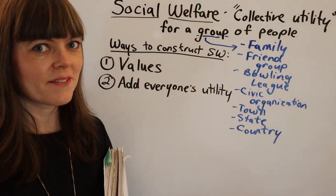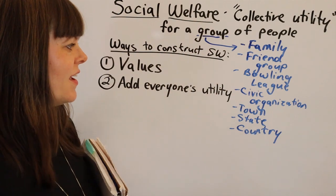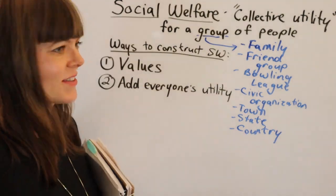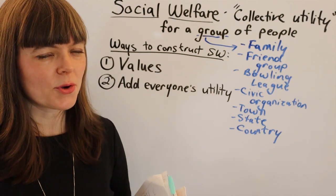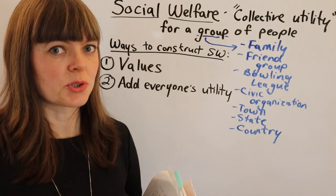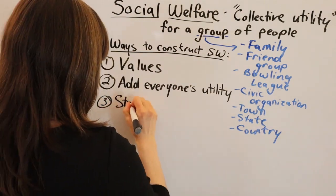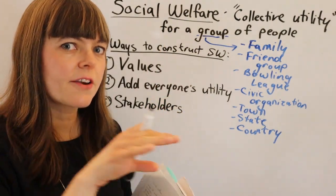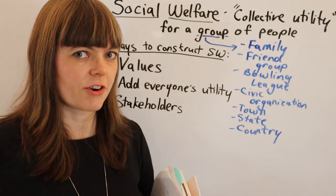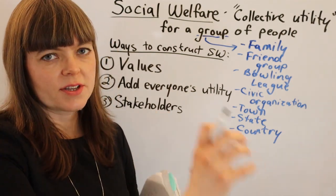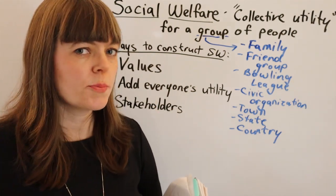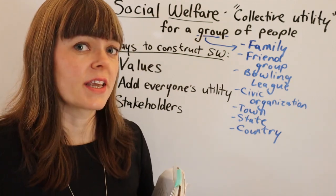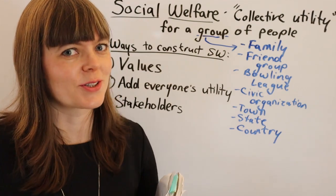Our third way of constructing a social welfare function is somewhat similar to the second — it could almost be considered a subcategory — but I'm going to treat it as distinct. That's to do a stakeholder analysis. What this looks like is you have different categories of people who are affected differently, and you add up the utility of each of these separate groups differently in your function.